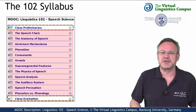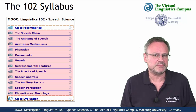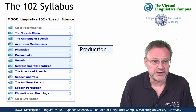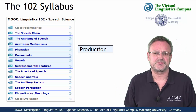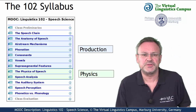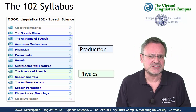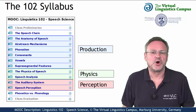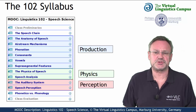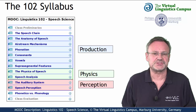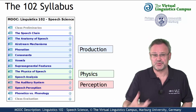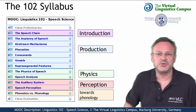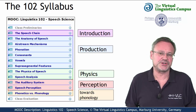The linguistic content can be subdivided into three main parts. The first part looks at the production of speech, also known as articulatory phonetics. Then we will deal with the physics of speech, alternatively labeled as acoustic phonetics. And the third part focuses on the perception of speech, also referred to as auditory phonetics. These central parts are surrounded by an introductory unit, the speech chain, and a unit that leads from phonetics to phonology at the very end.